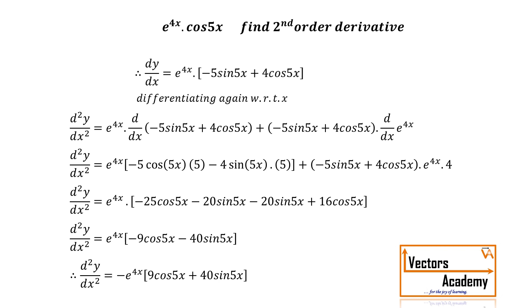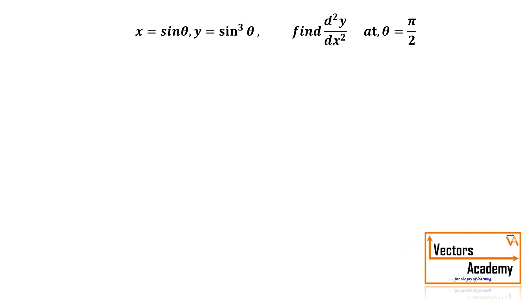Now these were some easy questions. We will now look at a question which is parametric in form. We have x and y with θ as the parameter, and we have to find the second order derivative d²y upon dx² at θ equal to π by 2.